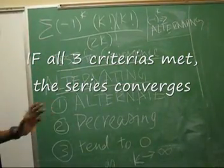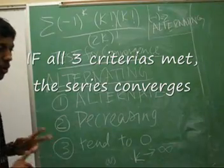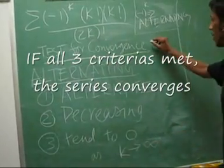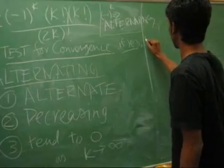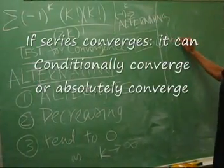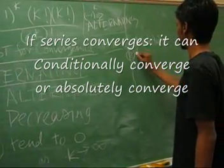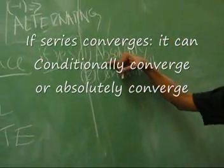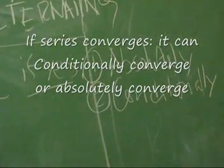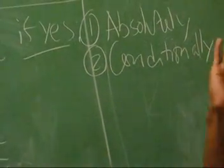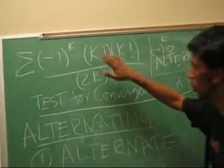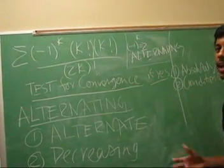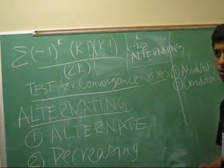But then there are two kinds of convergence: conditionally convergent or absolutely convergent. To check which one, you ignore the negative 1 to the k — pretty much take the absolute value of the expression — and then use any test you know to see if it converges or not.